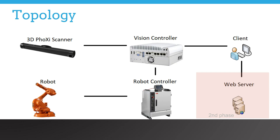Bin Picking Studio is a web-based application hosted on a web server running on the vision controller. The vision controller has several network interfaces used for communication with the Faux-XI scanner, robotic controller and user. The user can access the studio from a regular web browser installed on their personal computer. All communication is over Ethernet and TCP/IP protocol. An extension running on the cloud will be an option in the future.